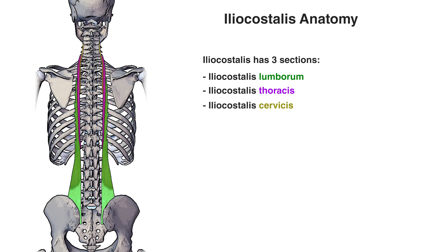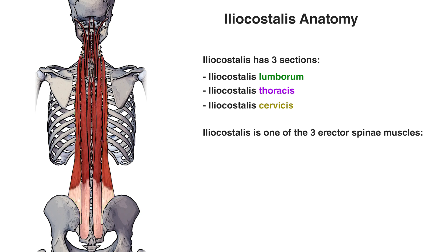Another thing to note about this muscle is it's part of the erector spinae muscle group. The erector spinae muscle group is comprised of three muscles, and now we can see all of the muscles of the erector spinae muscle group together. Our first erector spinae muscle is the iliocostalis, which I've highlighted here in green, and it's the most lateral of the erector spinae muscle group.